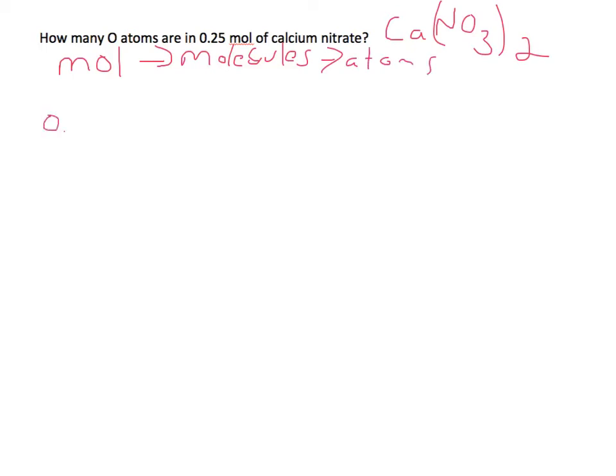And so we're starting with 0.25 moles. And I'm not going to write out the calcium nitrate part here, but you probably should. And so we're actually going to multiply that by, so we need to go from moles to molecules. And we know that in one mole of calcium nitrate, how many molecules are there? Well, there's always 6.022 times 10 to the 23rd molecules in one mole. And that's molecules of calcium nitrate.